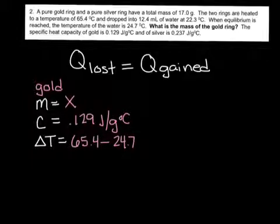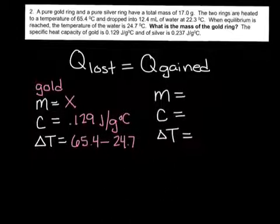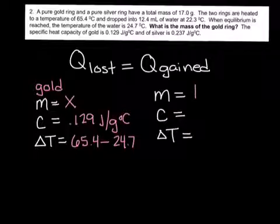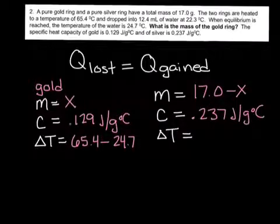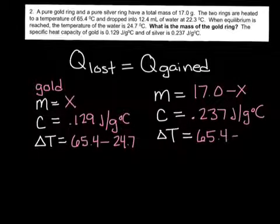Looking at my silver, we don't know the mass of silver. It's not asking us for it, but we're still going to need to think about that in terms of the mass of gold compared to the mass of silver so that we can solve this whole problem. So gold plus silver had a total mass of 17 grams. So if the mass of gold is x, then we know that the mass of silver is 17.0 minus x. The specific heat capacity of silver is 0.237 J/g°C, and the temperature change would be the same, 65.4 minus 24.7.